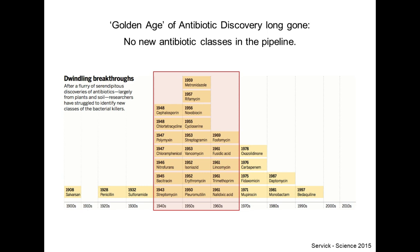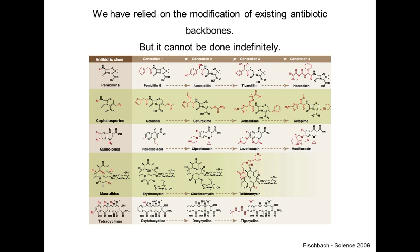To compound the problem, we do not have many new antibiotic classes in the research pipelines. The golden era of antibiotics, which happened sometime in the 60s and 70s, is now long gone. We discovered most of the antibiotic classes used today, and ever since then we have not been able to keep that pace of discovery of new classes.